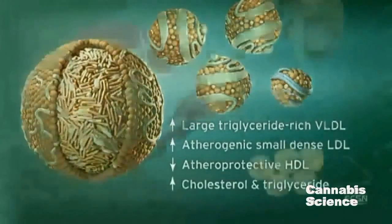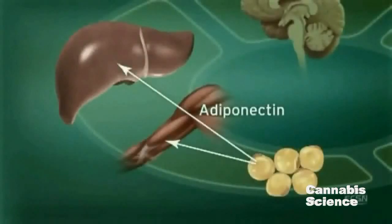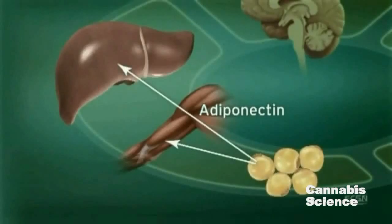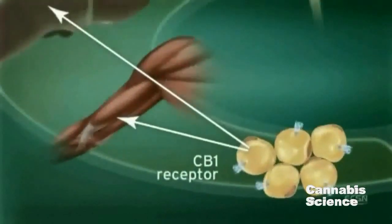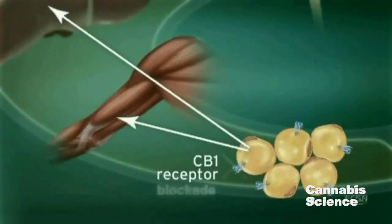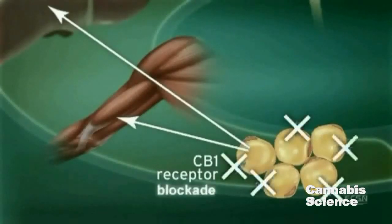Adiponectin, another hormone secreted by adipocytes, regulates lipid and glucose metabolism. Adiponectin is believed to regulate fatty acid oxidation in muscle and liver, thus improving insulin sensitivity. CB1 receptor stimulation in adipocytes reduces adiponectin, while CB1 blockade increases adiponectin synthesis.